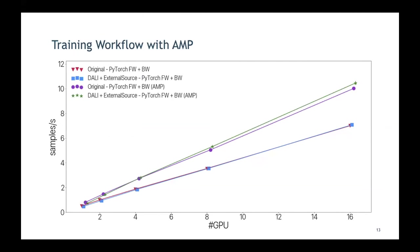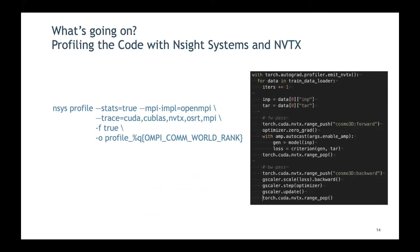After adding AMP, a speedup appeared and the benefit of the DALI pipeline became slightly visible, though not dramatic. To investigate further, profiling was done with Nsight Systems, using its tracing functionality for CUDA calls and NVTX. PyTorch has an autograd profiler emit_nvtx function that respects NVTX annotations within a context manager, allowing you to annotate the forward and backward passes so they appear labeled on the timeline.